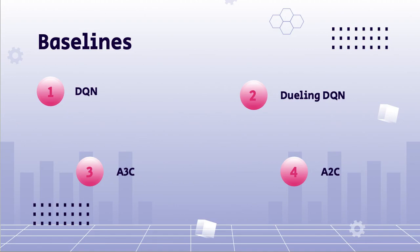The PPO algorithm is then compared with these pre-existing algorithms, namely DQN, Dueling DQN, A3C, and A2C.